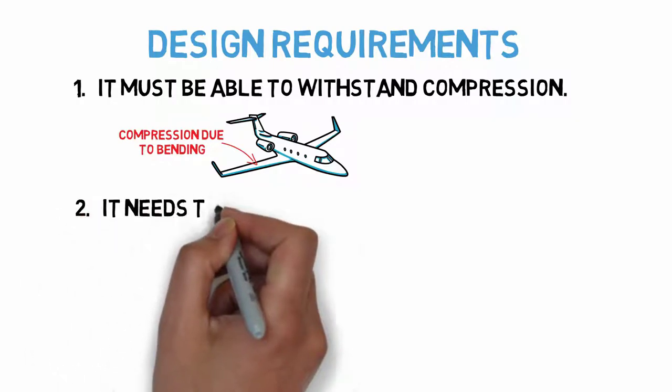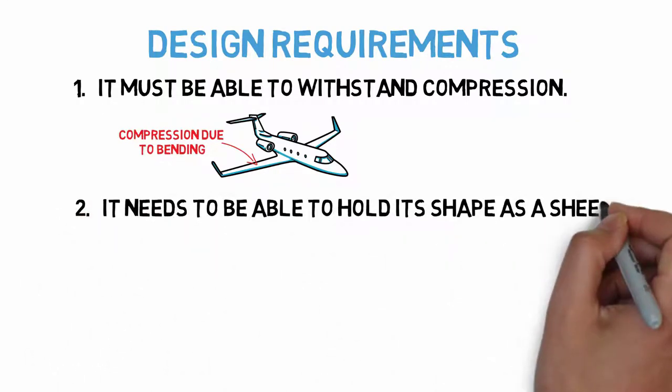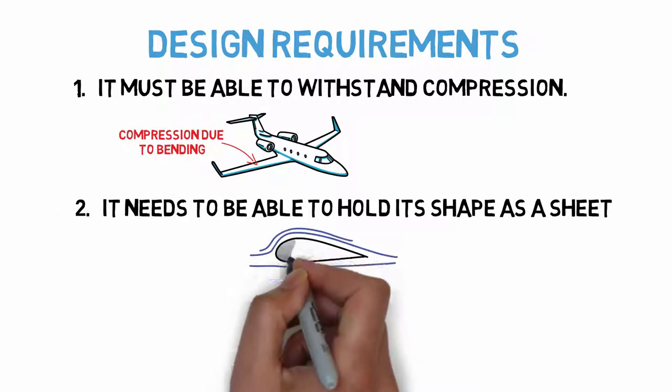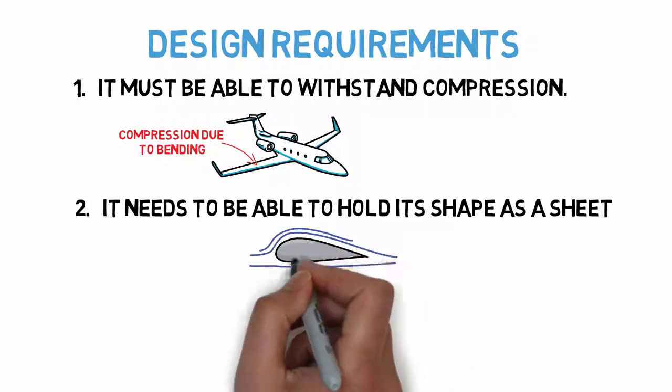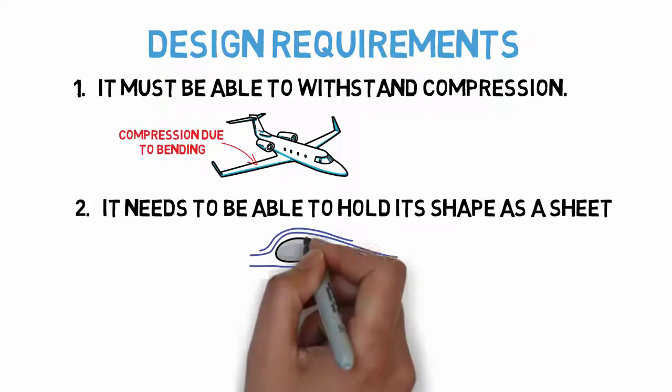Two, it needs to be able to hold its shape as a sheet. We want it to be able to handle loads but also not to deform significantly under them. If it does, it could affect the aerodynamic profile of the wing among other things.